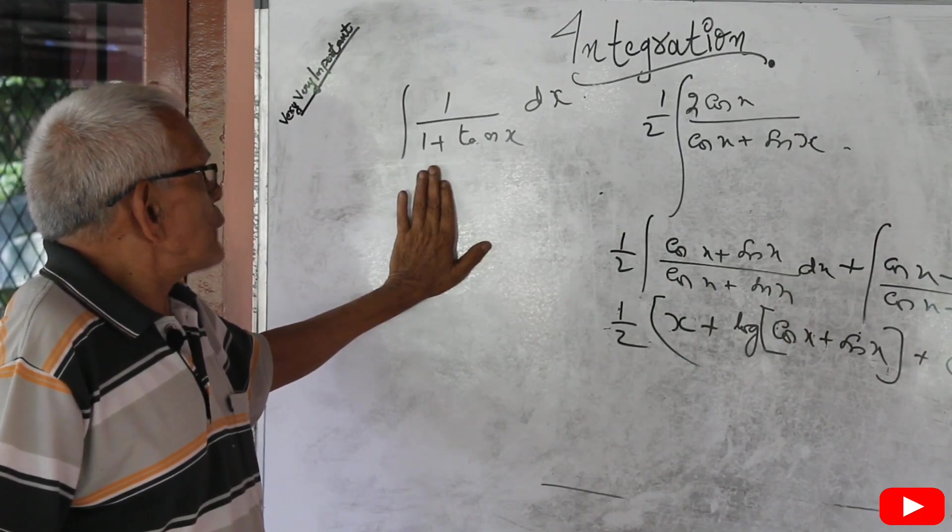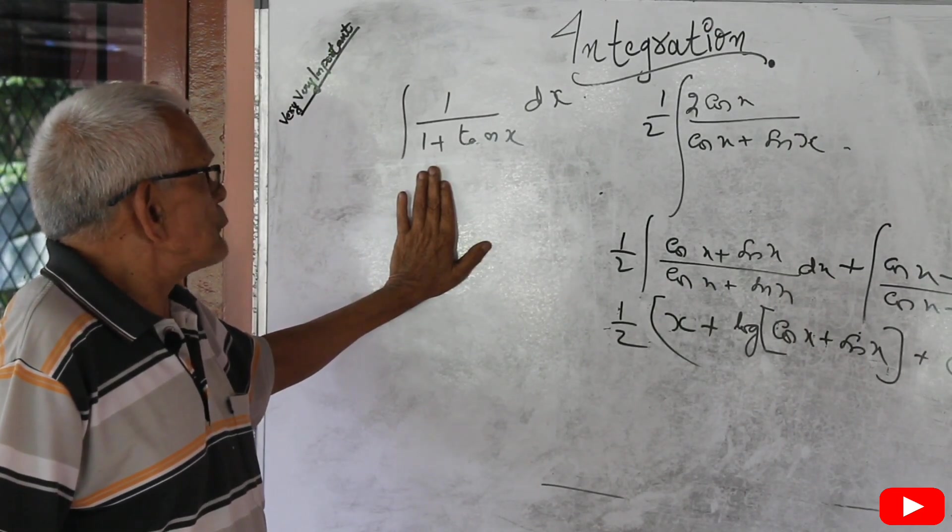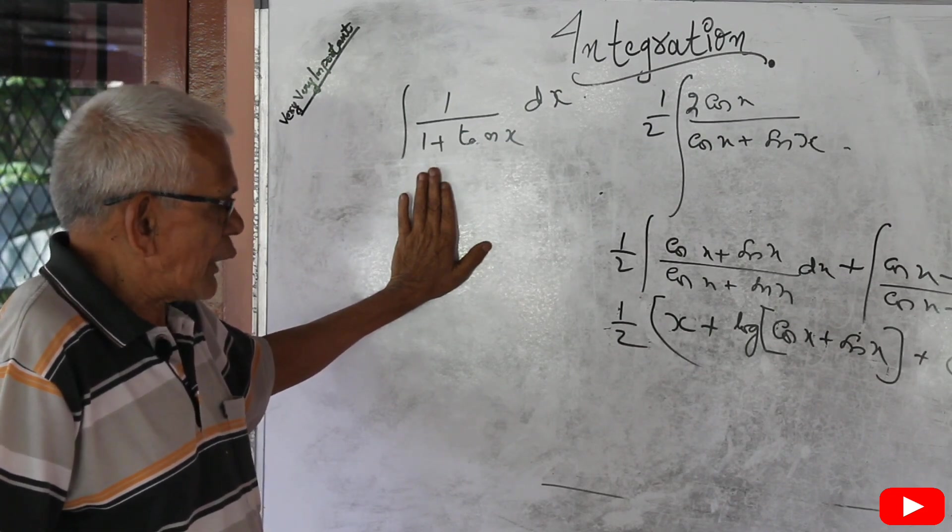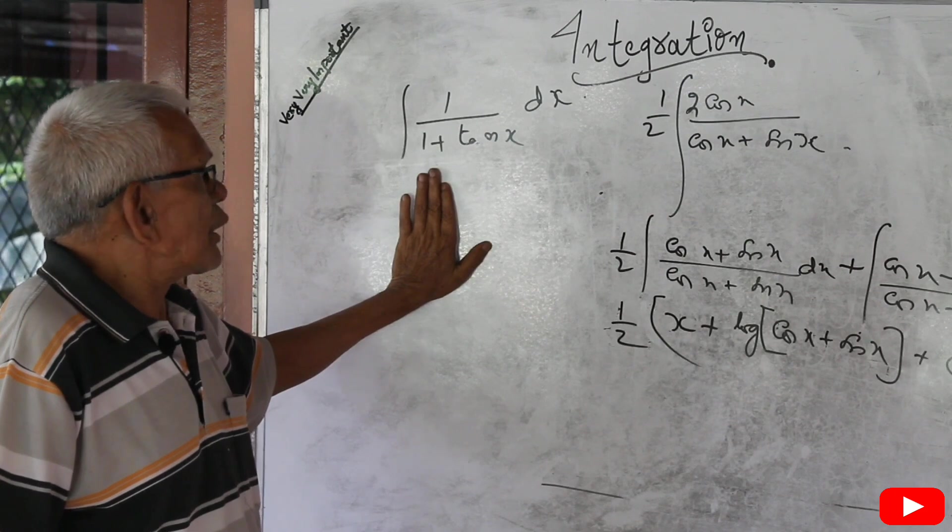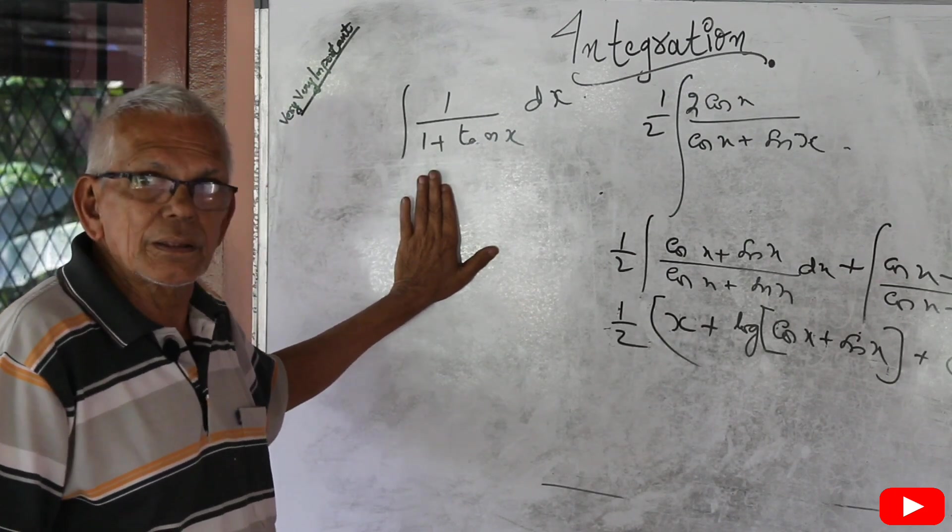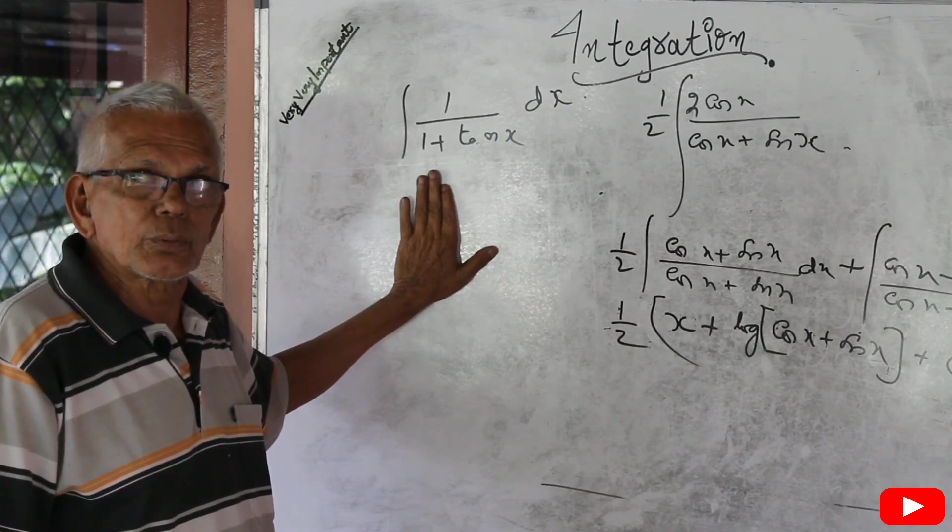1 by 1 minus tan x. 1 by 1 plus cot x. 1 by 1 minus cot x. This is CBCC. This is not the same. The answer is not the same.